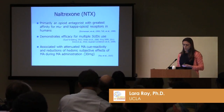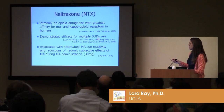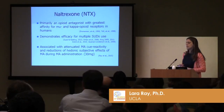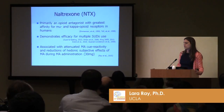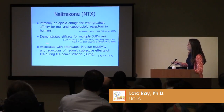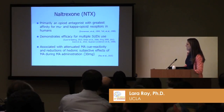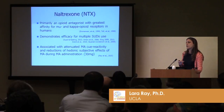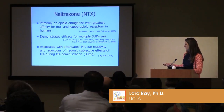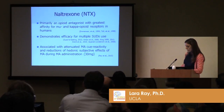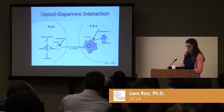We hope to target this using naltrexone. As you probably know, it's primarily an opioid receptor antagonist with highest affinity for mu, also some affinity for kappa opioid receptors. It's FDA-approved for alcoholism and also approved for opioid dependence, although via very different mechanisms for those two disorders. We just published a study in Neuropsychopharmacology showing that naltrexone does attenuate cue-induced craving for methamphetamine. Also, when you give a controlled dose — an infusion of methamphetamine in the laboratory — naltrexone blocks some of the rewarding effects of IV methamphetamine.